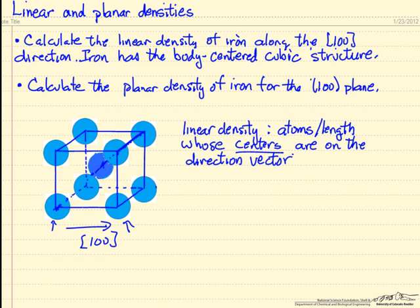In this example, we're going to calculate linear density and planar density for iron. Iron has the body-centered cubic structure.